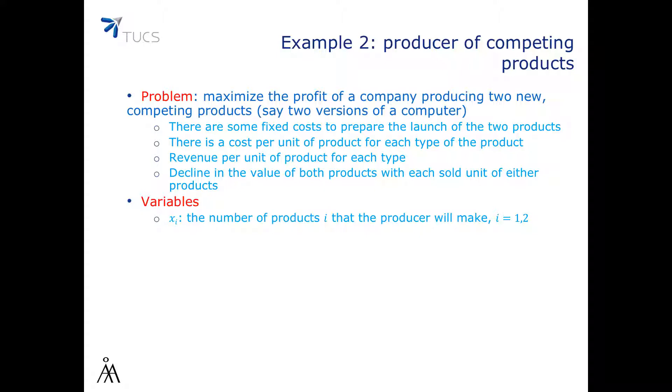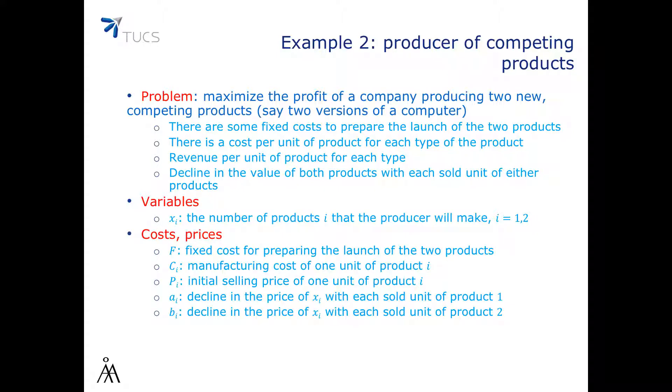The variables are going to be x1 and x2 standing for the number of products 1 and 2 that the producer is going to make. There are also some costs and prices. We will denote by F the fixed cost for preparing the launch of the two products, by C1, C2 the manufacturing cost of one unit of product 1 and 2, by B1, B2 the initial selling price of one unit of product 1 and 2. By A1 and A2, we will denote the decline in the price of x1 and x2 with each sold unit of product.